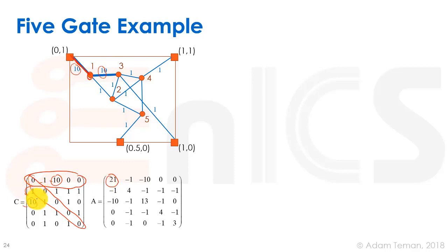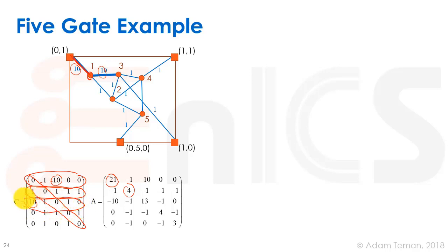For the second row, we sum up row two and get four. Gate two has no connections to any pads, so we add zero, giving four on the diagonal. For gate three, the row sum is 10 plus 1 plus 1, which is 12, and it connects to a pad with weight one, so we get 13 on the diagonal, and so on for the full A matrix.